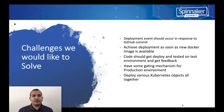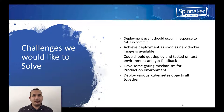First of all, we would like to have a deployment event occur in response to a GitHub commit. Achieve deployment as soon as a new Docker image is available. Code should get deployed and tested on a test environment and get feedback — which could be an automated feedback loop to show code quality. Have some gating mechanism for a production environment; we do not want production deployed without anybody knowing. Also, deploy various Kubernetes objects altogether — service account, deployment, service, network policy, pod disruption budget — all Kubernetes kinds deploying together.